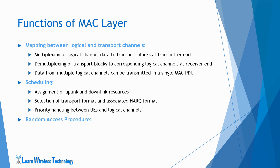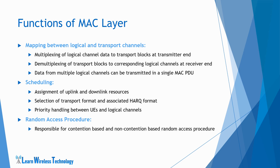The next major function performed by the MAC layer is the Random Access Procedure, or RACH procedure, during initial network access. MAC is responsible for the Random Access Procedure in the uplink, which can be either a contention-based or non-contention-based process. RACH procedure is used when UE wants to move from RRC idle to RRC connected state, when connection re-establishment is required if radio link failure happens, and also during handover when UE moves from one cell or E-NodeB to another.